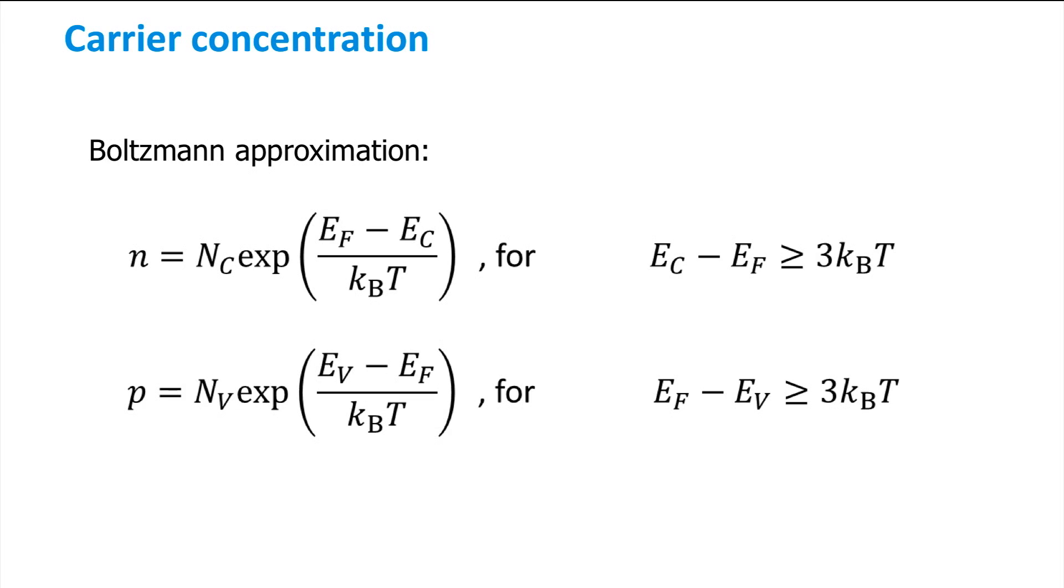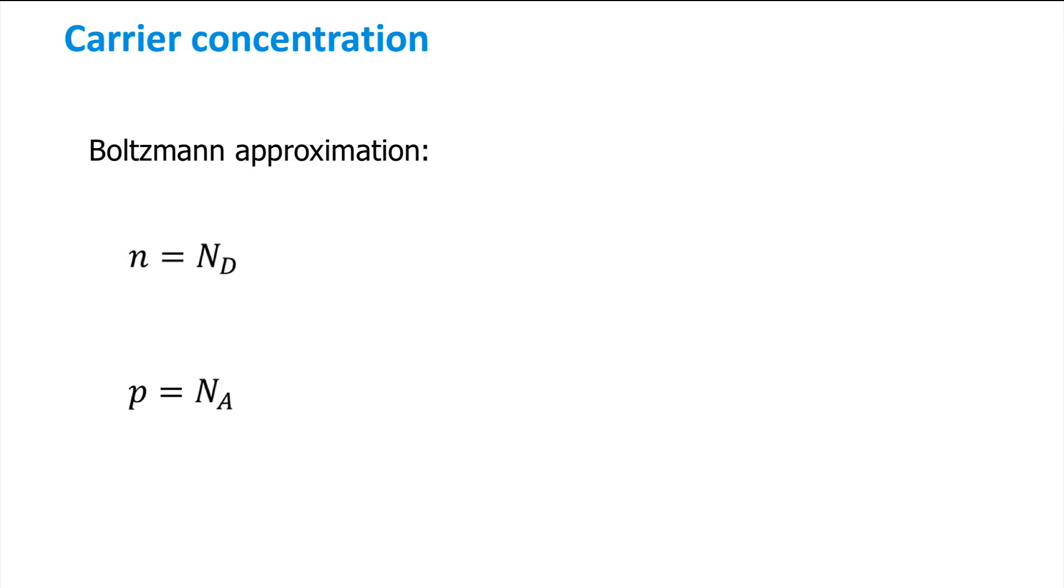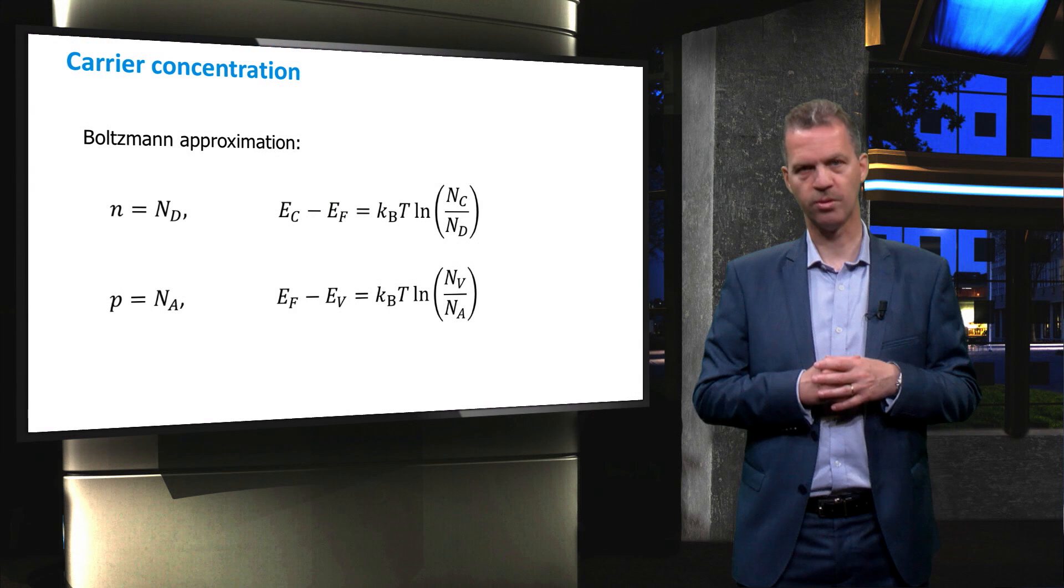When doping atoms are introduced in the crystalline silicon lattice, the charge carrier concentrations will be affected. At room temperature, there is enough thermal energy to ionize all donor and acceptor impurities. This is called complete ionization, and implies that for N-type silicon the electron concentration can be taken to be equal to the effective donor concentration, and for P-type silicon the hole concentration is equal to the effective acceptor concentration. We can now obtain the position of the Fermi level that is directly related to the donor or acceptor concentration.